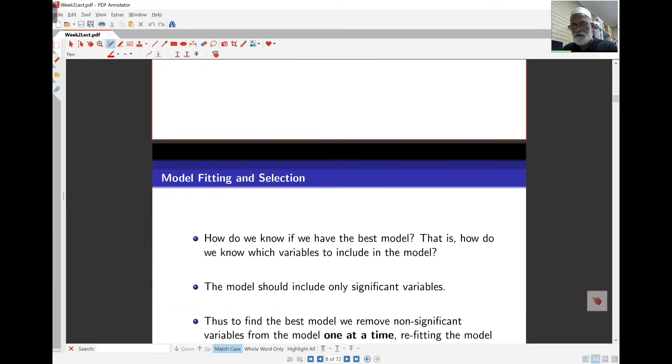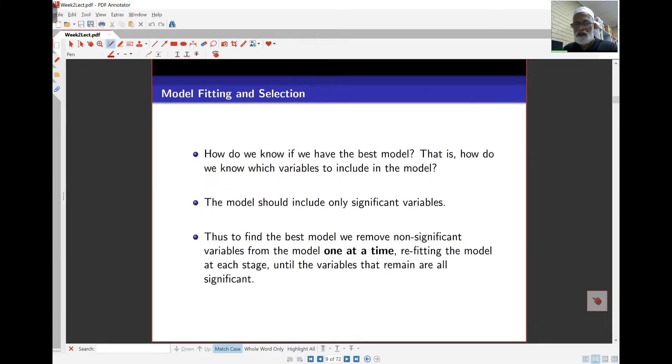Now, the question here is, how do we select the best model? That is, how do we know what variables should stay in the model, and what ones do you take out? Because we saw in the previous one, that out of the five or six variables, only two are significant. How do we proceed from here?